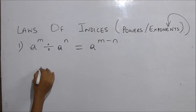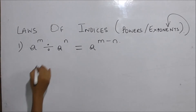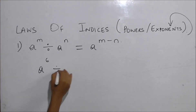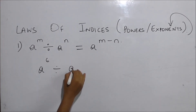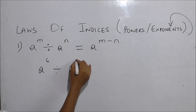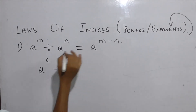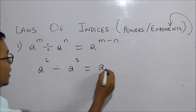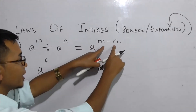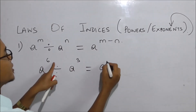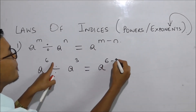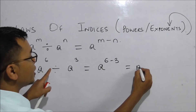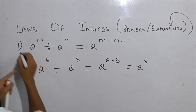If you do this, you can use A to the power of 6 divided by A to the power of 3. The rule is 6 minus 3, giving A to the power of 3.